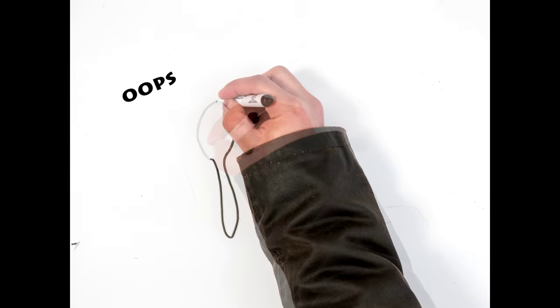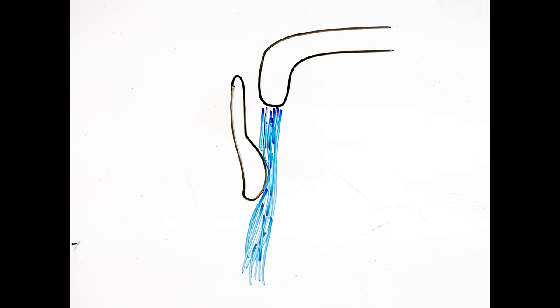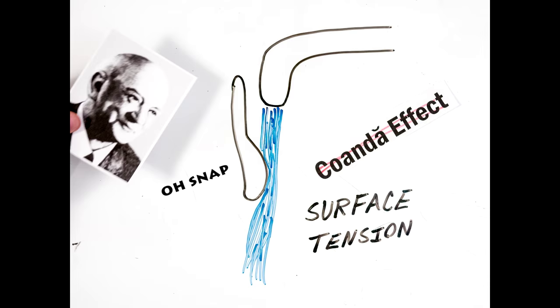Take for example a spoon. When the water from the faucet hits the curved surface of the spoon, one would often mistaken the sticking effect as the Coanda effect. But the sticking is caused mostly by surface tension from the water. Sorry Henry.